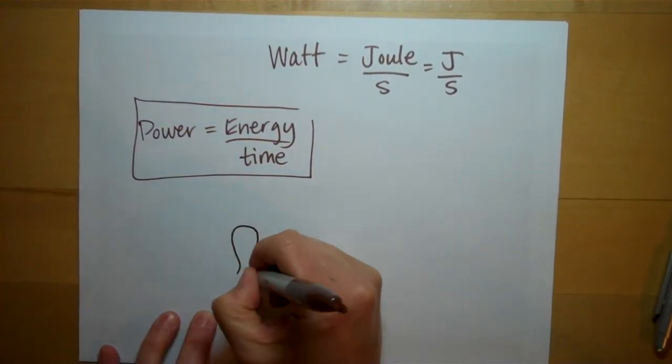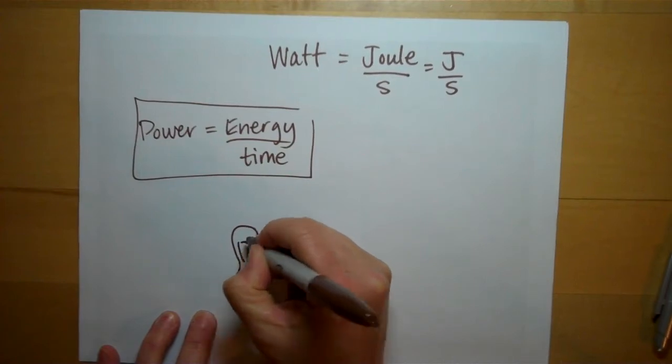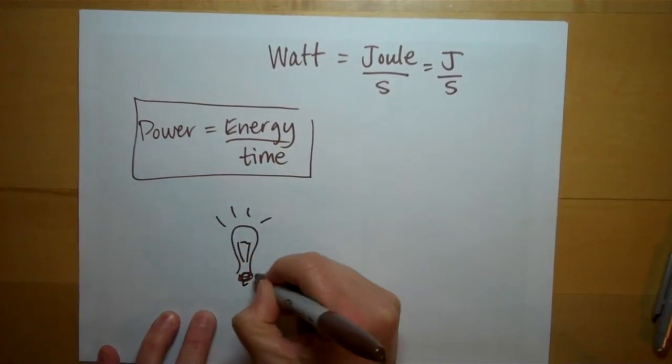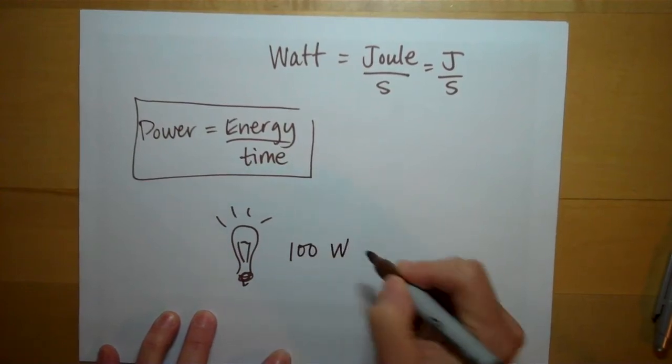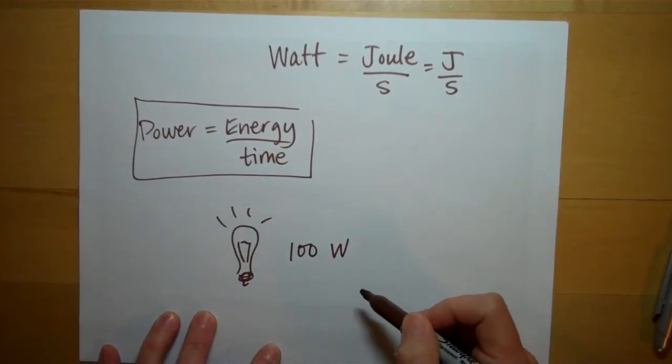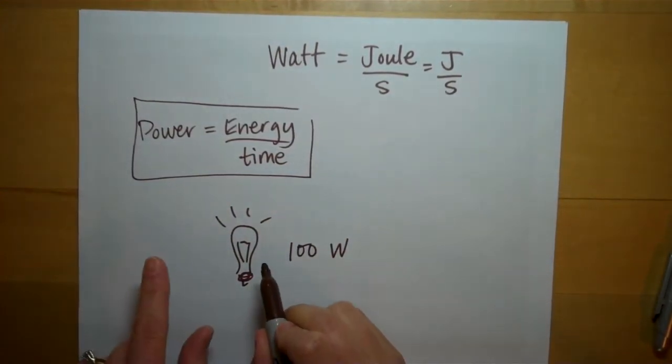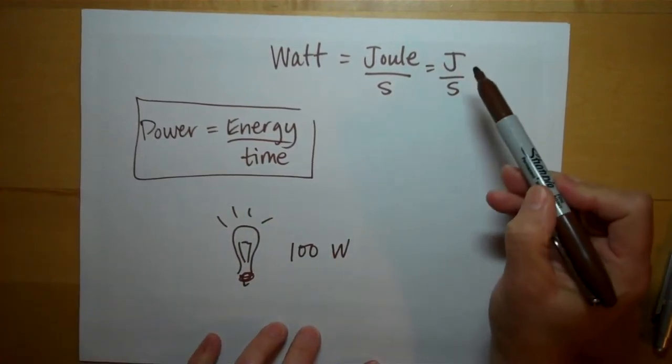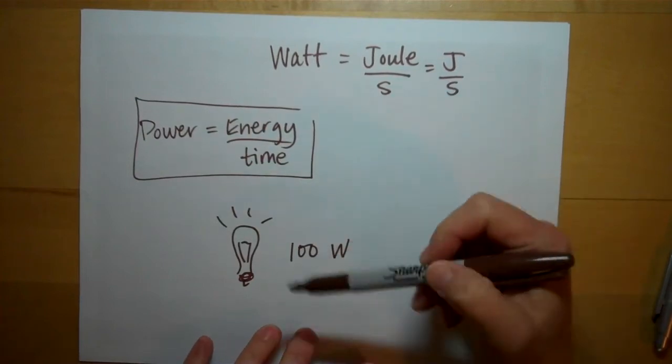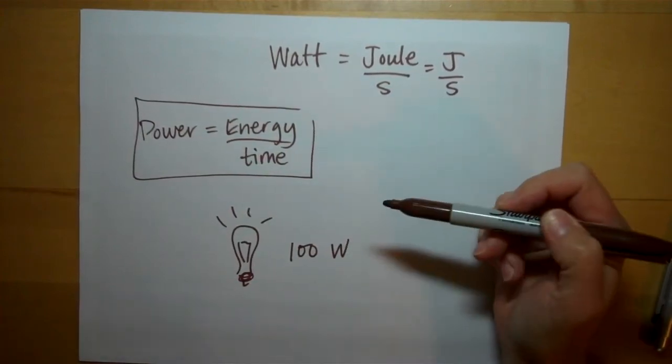So say we talk about an old-fashioned incandescent light bulb. This thing, say, requires 100 watts in order to run. In other words, it won't light up unless every second you're supplying it with 100 joules of energy. And that's the rate at which it's going to use up energy.